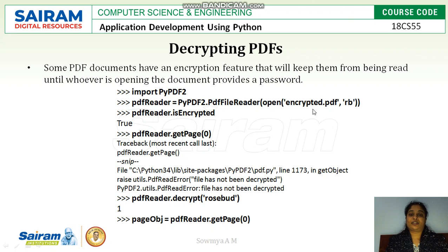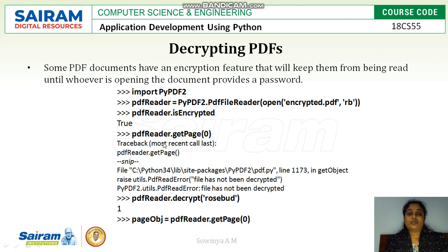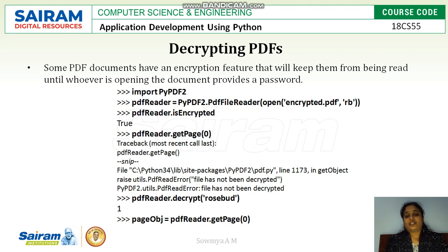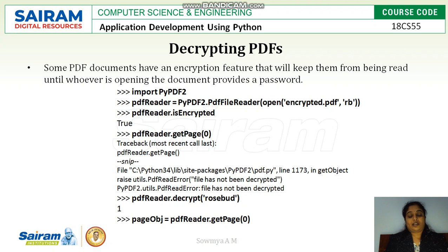pdf_reader.isEncrypted will return True if the file is encrypted. If you try to access an encrypted file directly, it throws a traceback error. To open an encrypted file, first we have to decrypt it. pdf_reader.decrypt() is the method used to decrypt it, and we have to pass the password as an argument. If you get 1 as the output, then the file can be opened with the help of getPage.